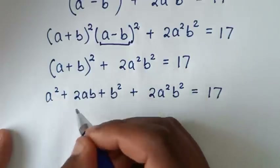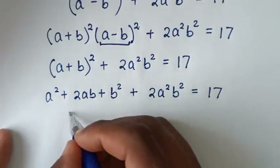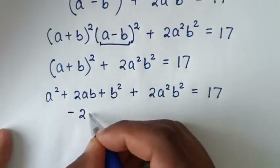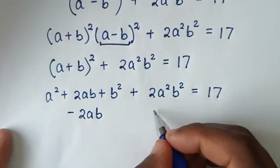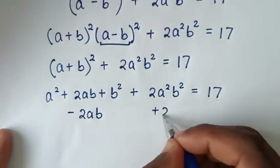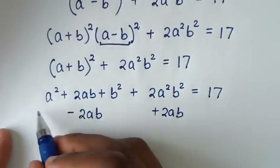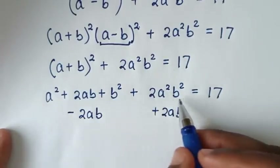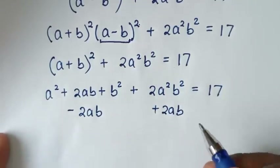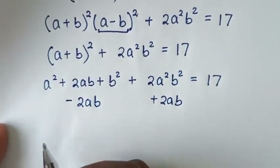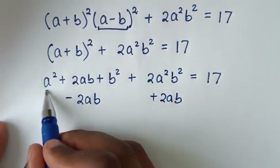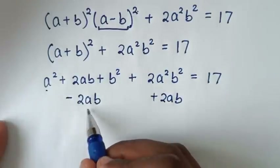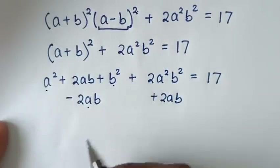We subtract 2ab from 2ab and also add 2ab to the left side of our equation. So it will be a² - 2ab + b², in the form of a perfect square.